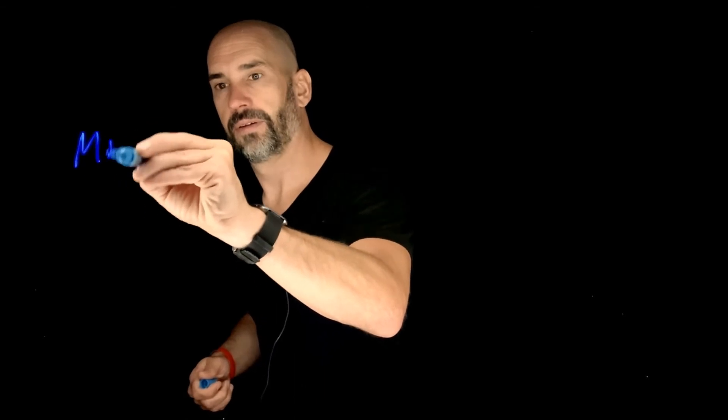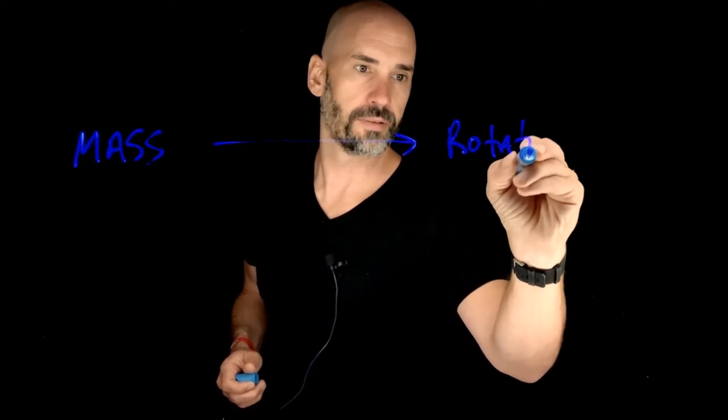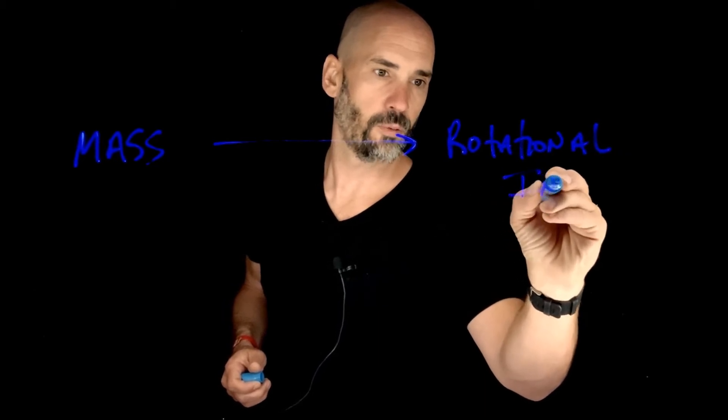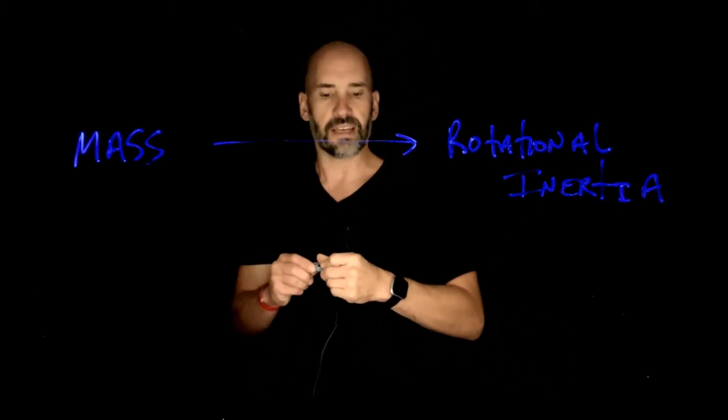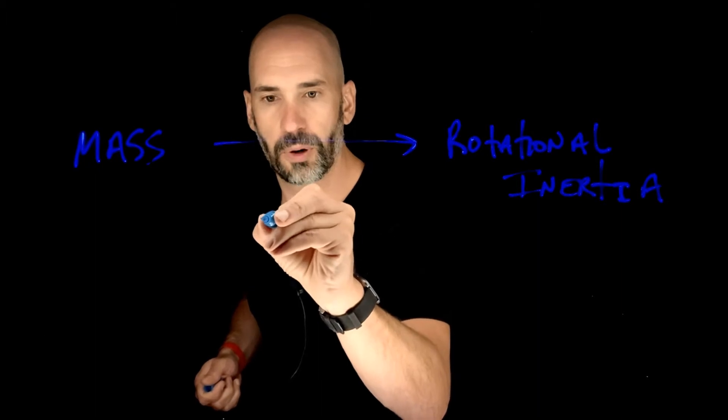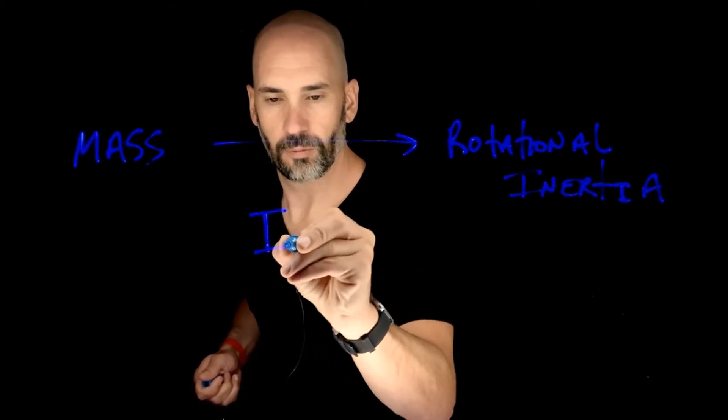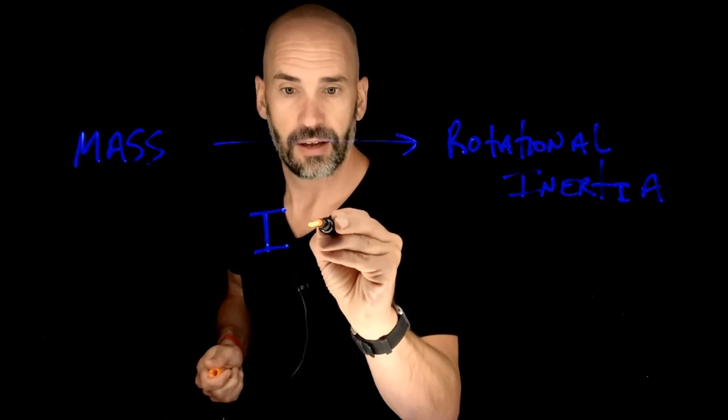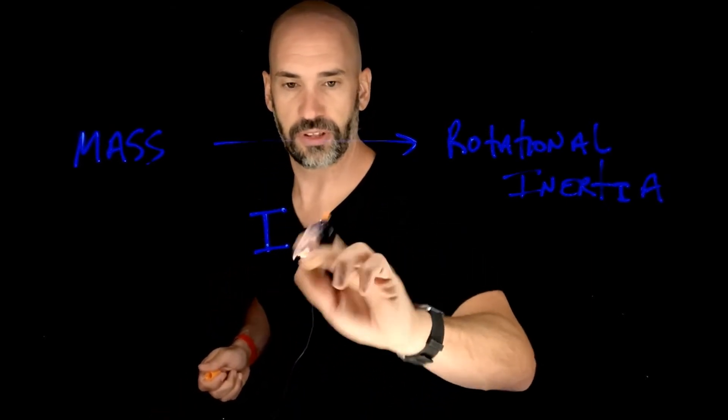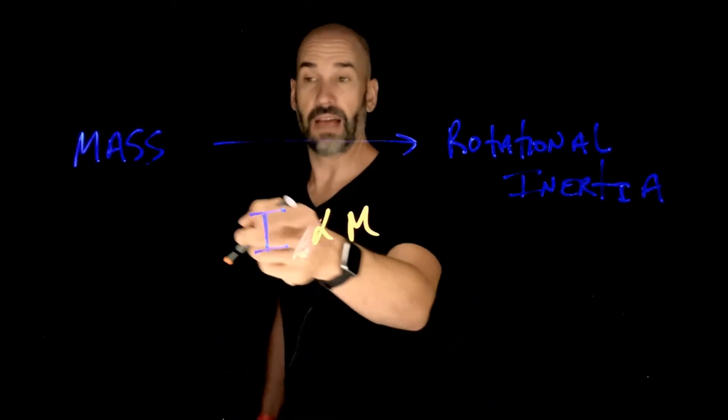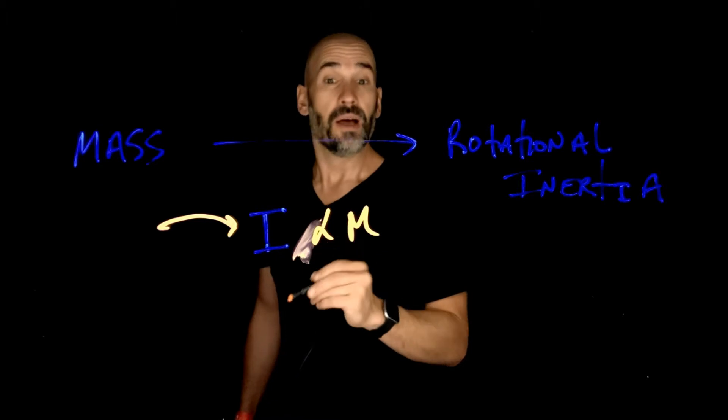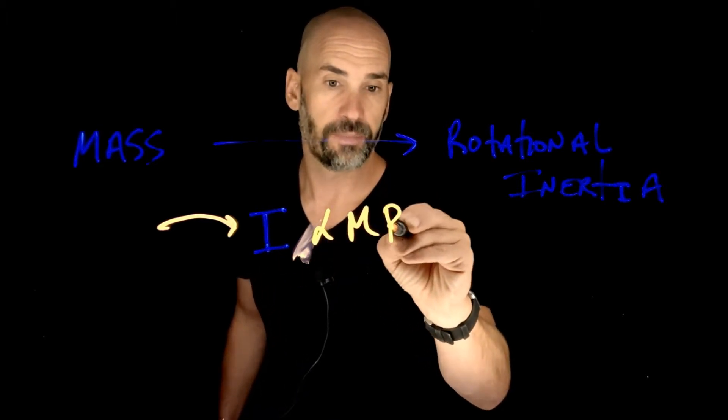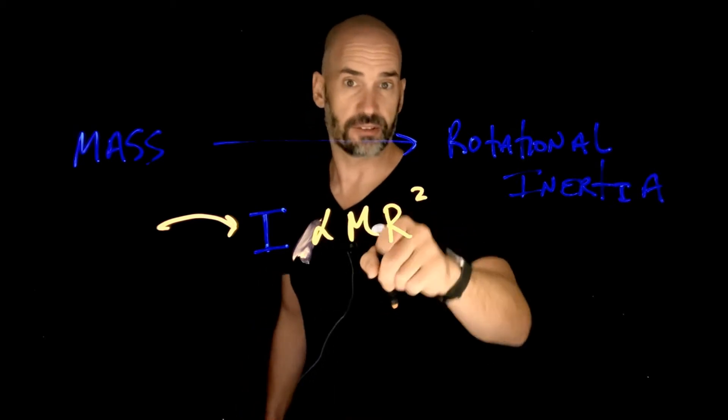So mass becomes something in the rotational world called rotational inertia. Rotational inertia is always proportional to two things: it's proportional to mass, which makes sense - obviously the mass in the rotational world should be proportional to mass. But it's also proportional to R squared. In other words, how far are you from the axis of rotation?